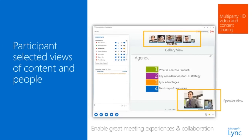Meeting view options are designed to bring content and people together while optimizing the Link meeting experience for every individual participant's needs. The meeting view is selected by the participant and visible only to them — each participant has control of their meeting view. Gallery view shows all the participants' photos or videos. Speaker view shows the meeting content with the presenter's video or photo in the lower right-hand corner. Presentation view shows only the meeting content — you get a full view of the content but won't see the participants. Compact view shows only the participants' photos; just hover over their photos to see their contact information.